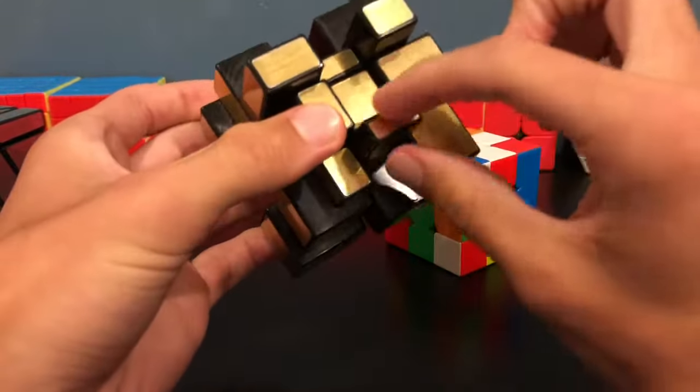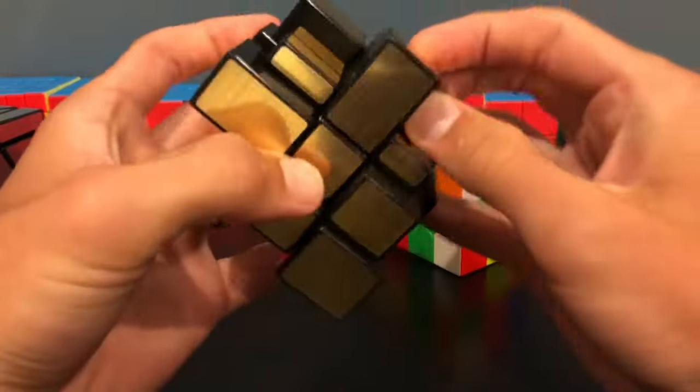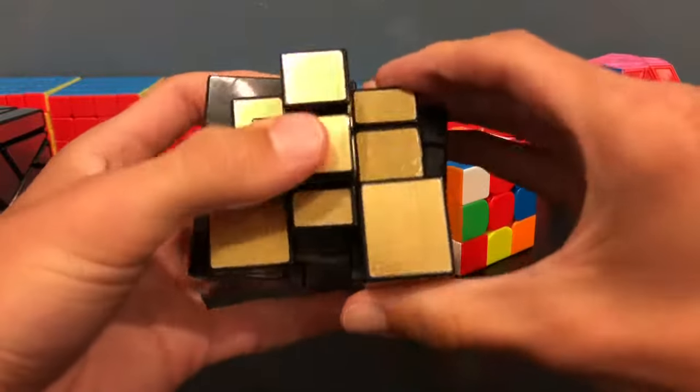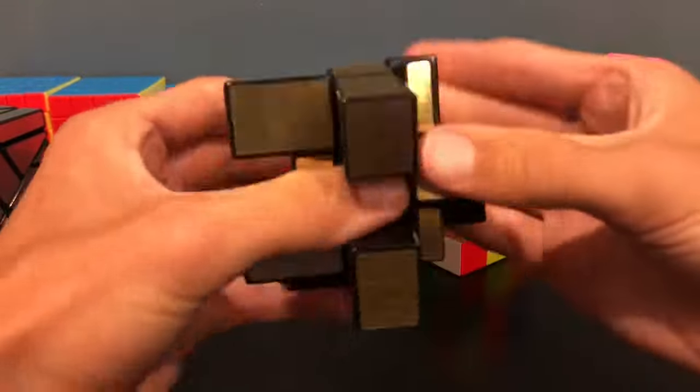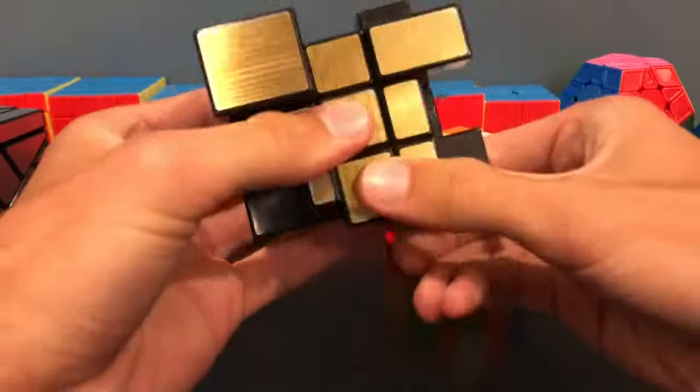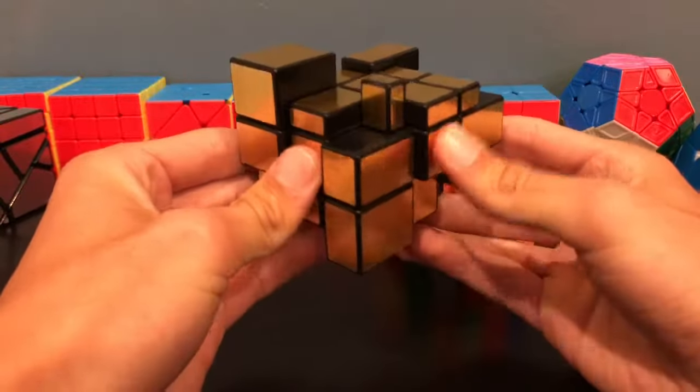Now we look for the other three thinnest edges. Here's one. And I'm not going to go too in detail with this because I trust that you can already make your white cross. And then you will just continue to find the thinnest pieces. That's the last one. Until you've made your white cross.